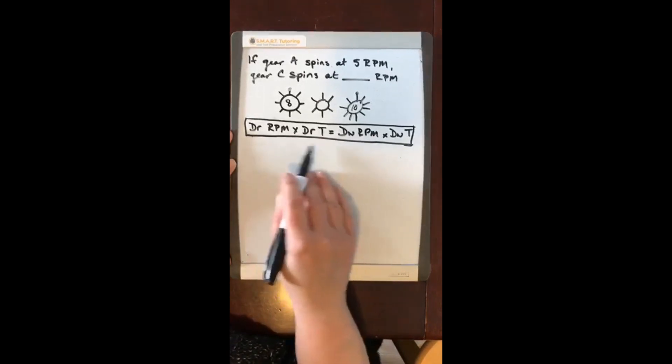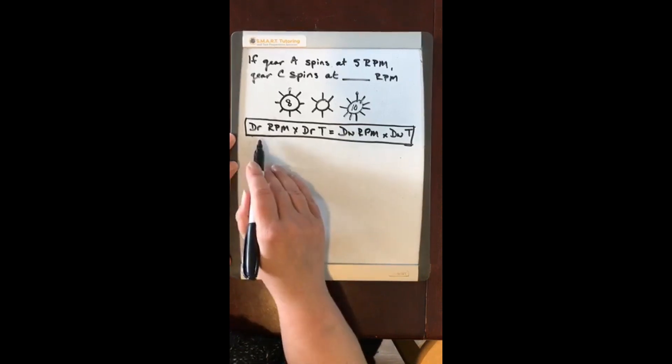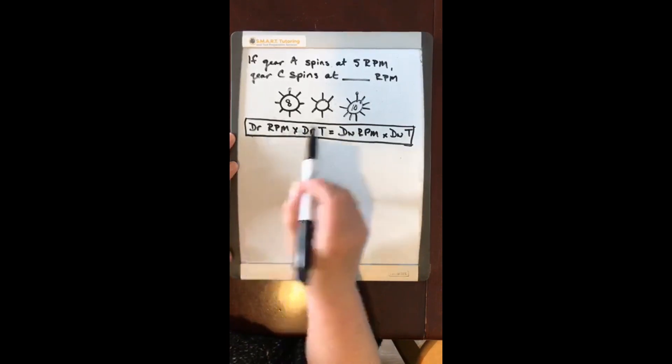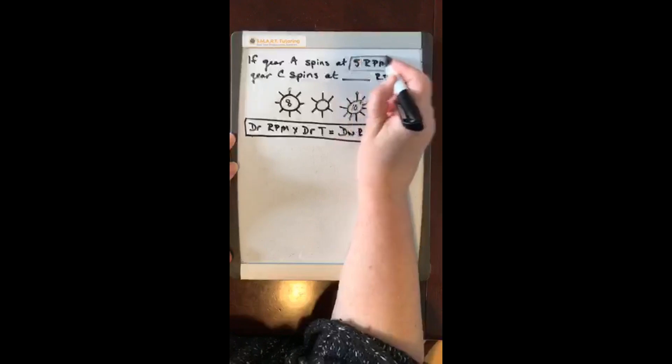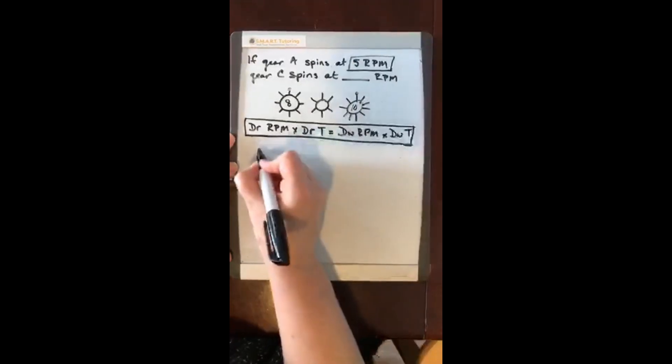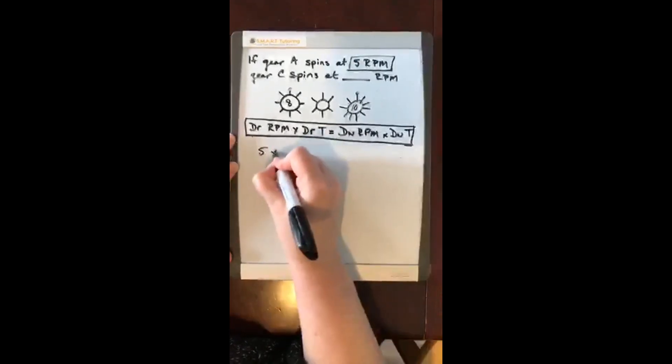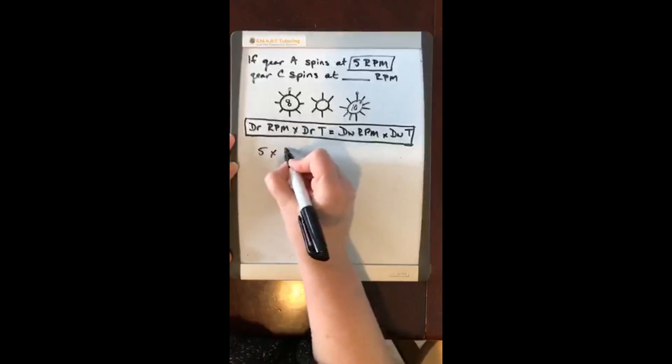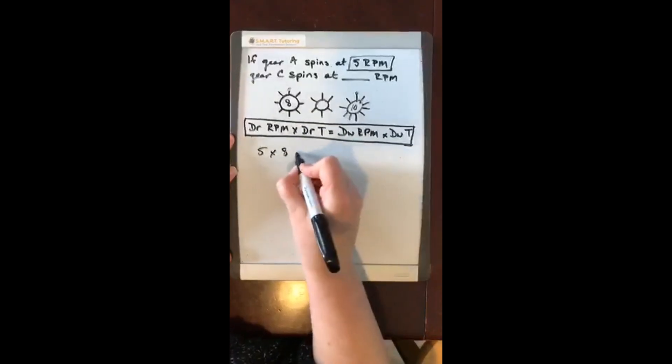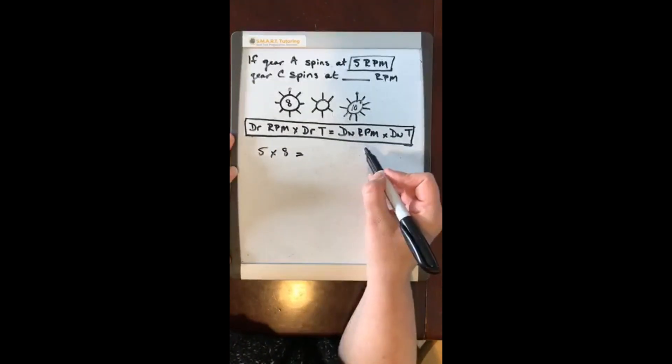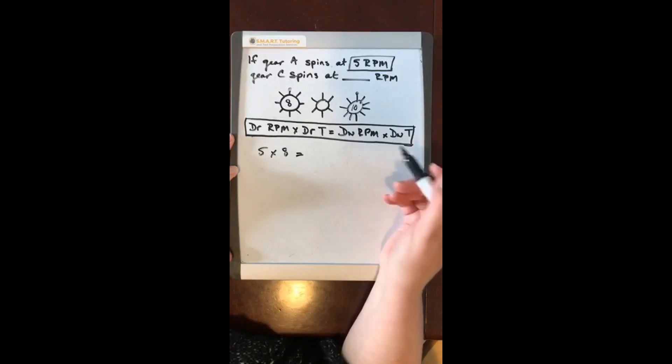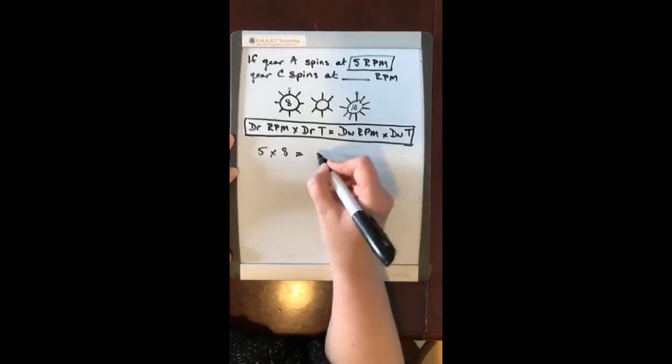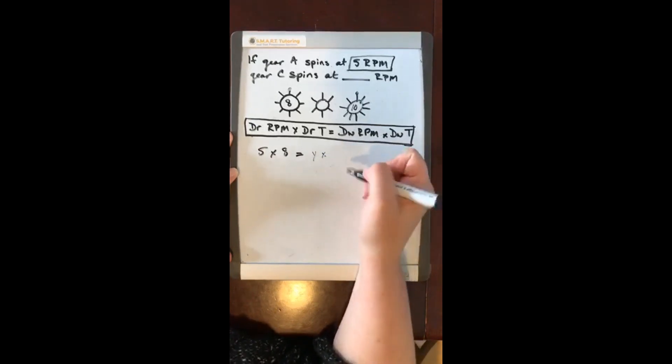Now we're going to plug in our numbers here. The driver rpm is given and that is 5 rpm, so we're going to put that in first. The driver teeth is 8, and on the other side here the driven rpm is what we're trying to determine. So let's call that y, and the driven teeth is 10.